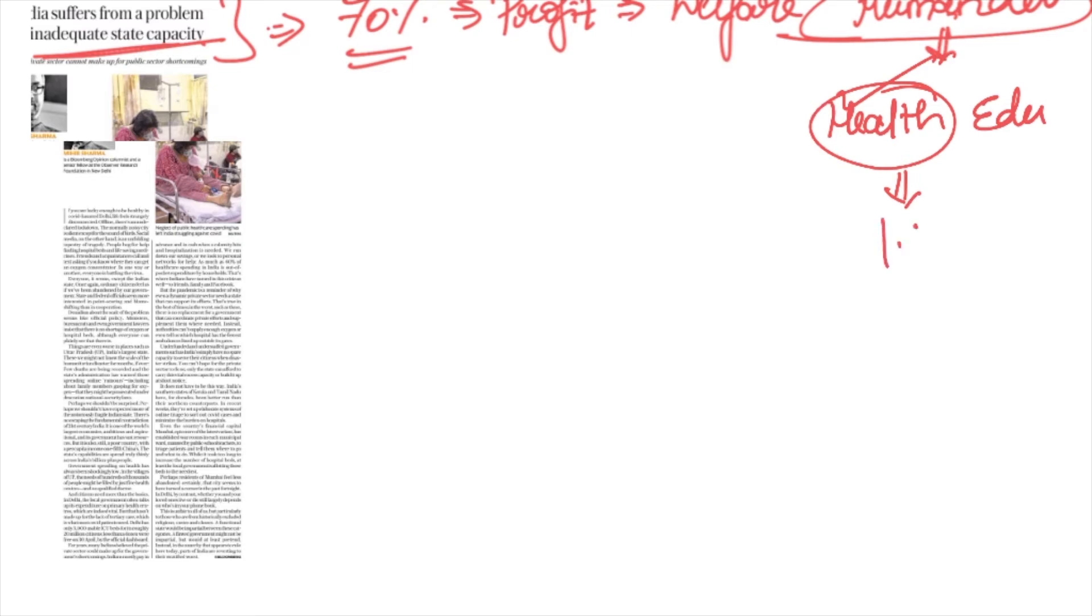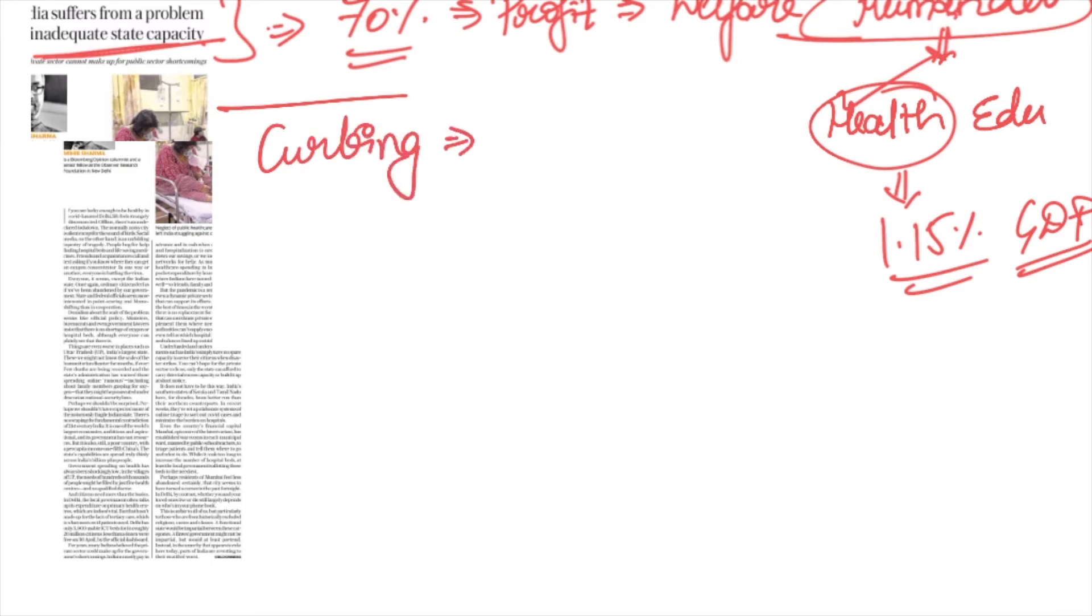One major reason with respect to health sector is the low GDP we spend. 1.15 percent is all we spend out of our GDP for health sector. Considering the crisis we are looking at right now, it is of monumental and epic proportions. Probably Second World War also did not see this kind of unprecedented number of deaths.